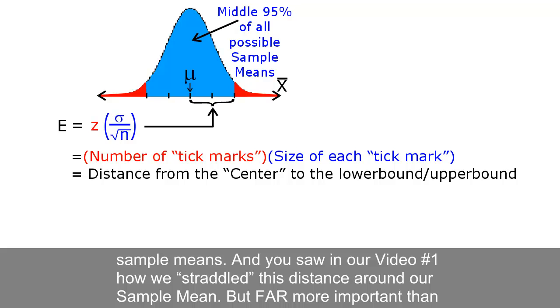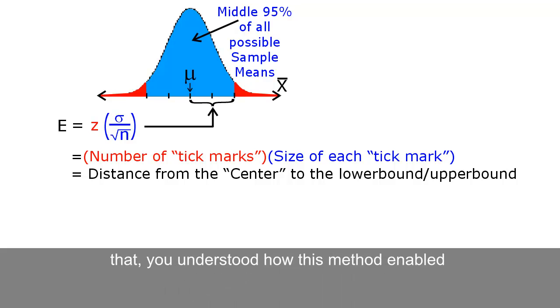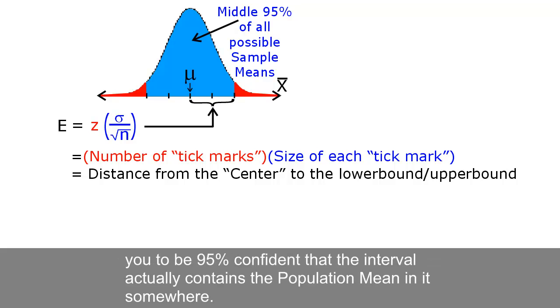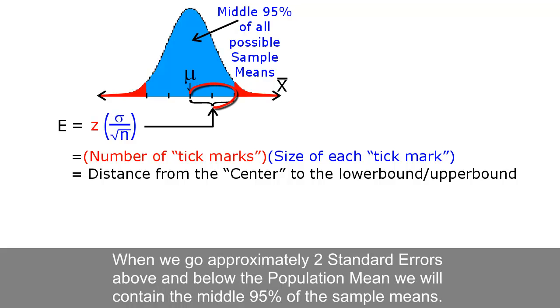But far more important than that, you understood how this method enabled you to be 95% confident that the interval actually contained the population mean in it somewhere.